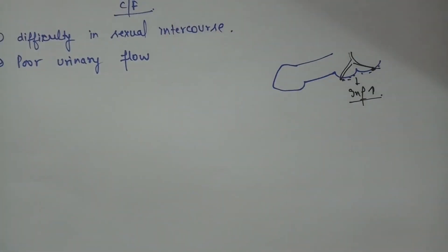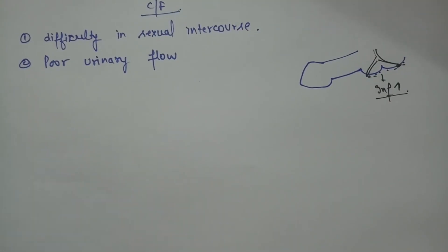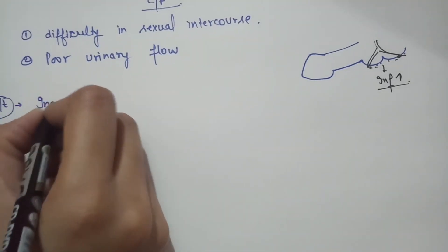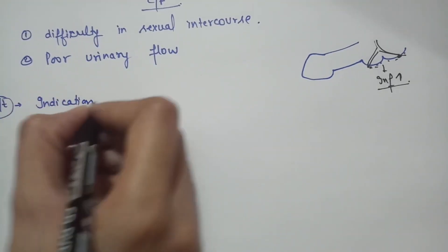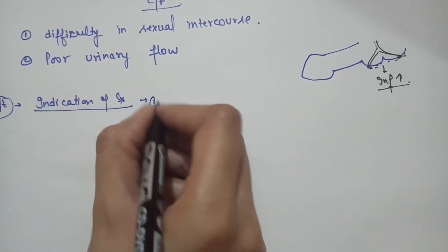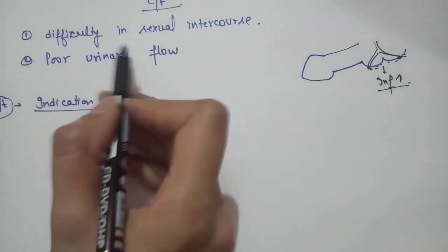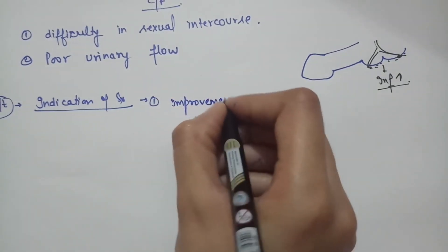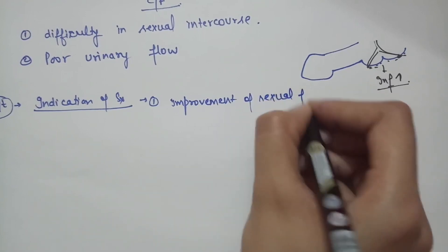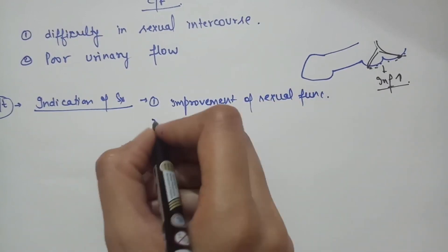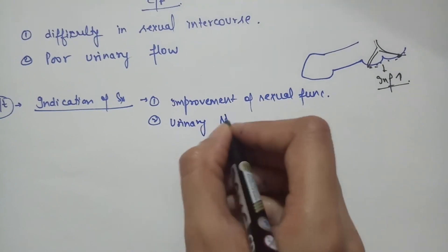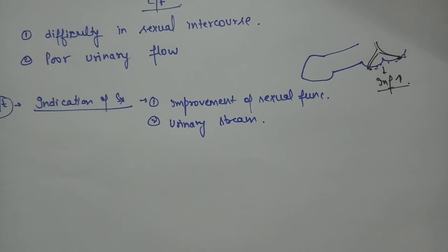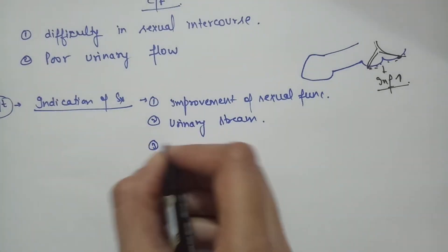Regarding treatment — the indications for surgery are: first, to improve sexual function due to difficulty in intercourse; second, to maintain normal urinary stream since the abnormal opening causes poor urinary flow; and third, for cosmetic reasons.